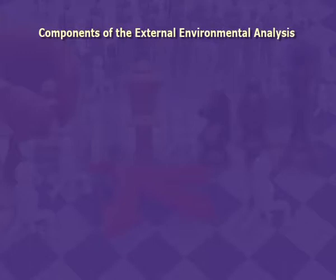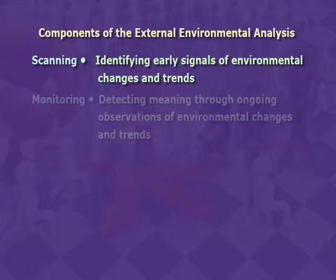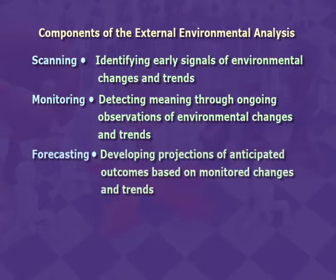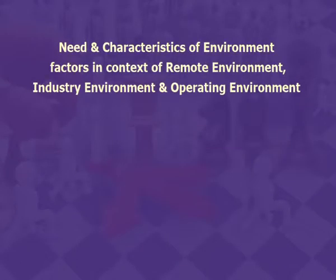The components of external environmental analysis are: first, scanning — identifying early signals of environmental changes and trends; second, monitoring — detecting meaning through ongoing observations of environmental changes and trends; third, forecasting — developing projections of anticipated outcomes based on monitored changes and trends; fourth, assessing — determining the timing and importance of environmental changes and trends for firm strategies and their management. The second point covers need and characteristics of environment factors in the context of remote environment, industry environment, and operating environment.